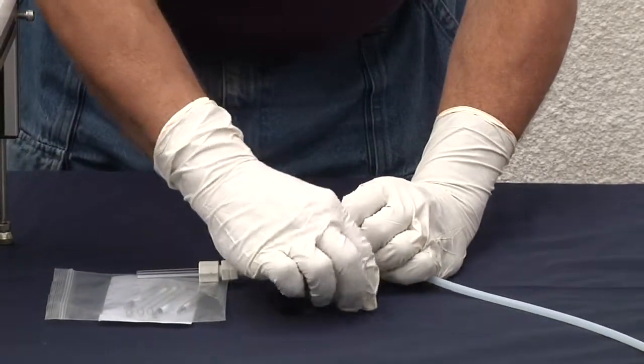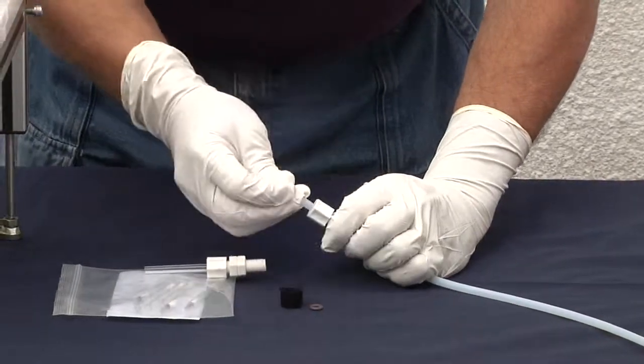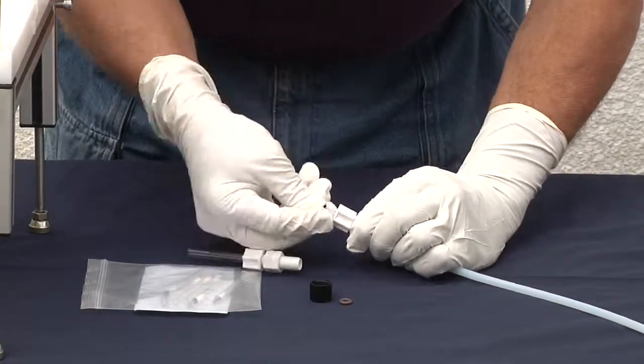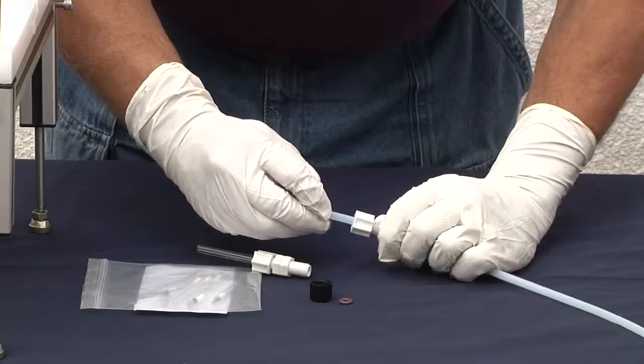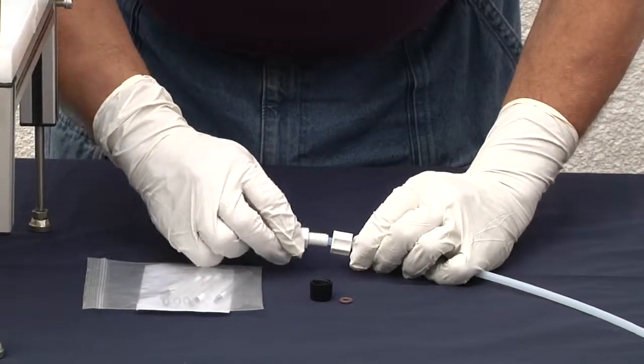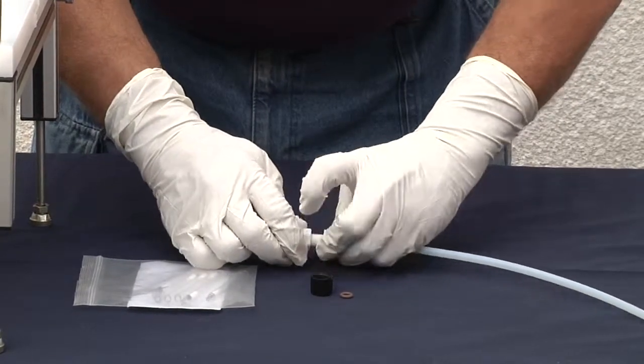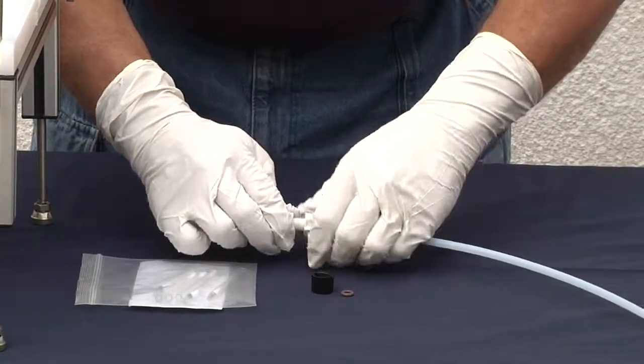On our tubing we put on our o-ring, pushing that forward until our tubing connects with the small end of the VCT making sure that we have a good seal.